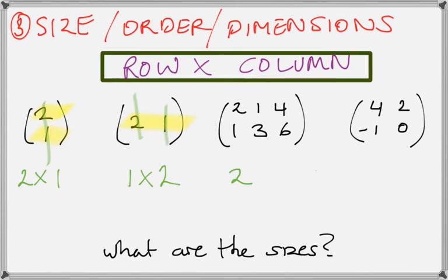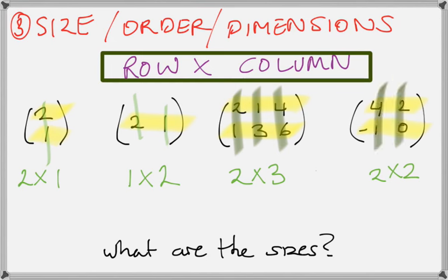The second one just has one row and 2 columns. So that's 1 by 2 because we're calling the rows first. And likewise, we can figure out the rest, right? 2 rows here, 3 columns here, bam, bam, bam. 2 rows here, 2 columns here. Nice.